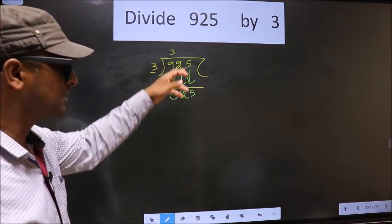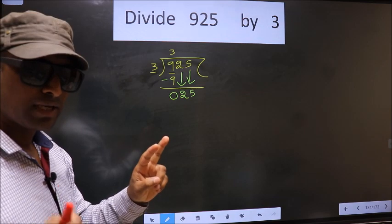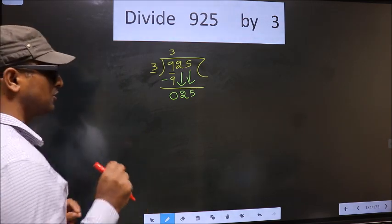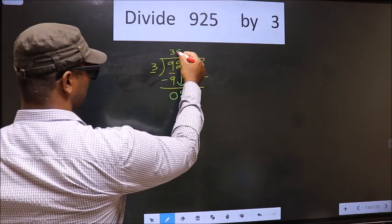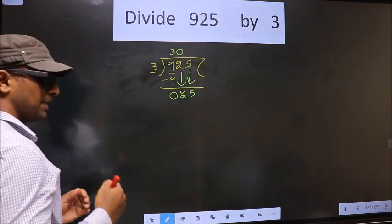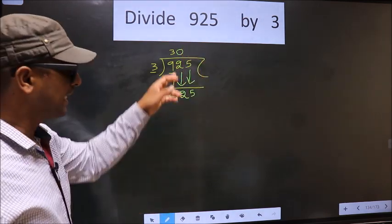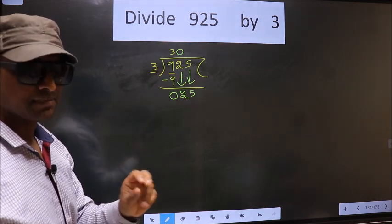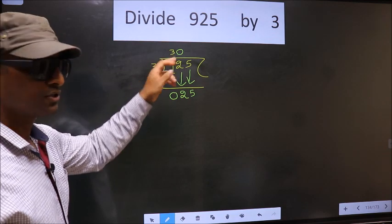I repeat: whenever you are bringing down 2 numbers at the same time, compulsory put 0 in the quotient. Remember this point.